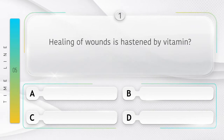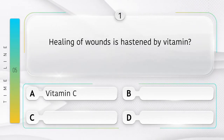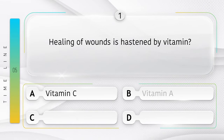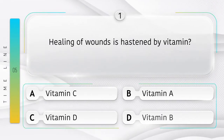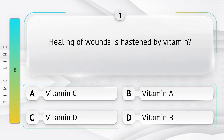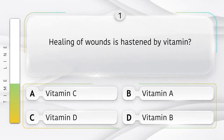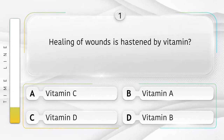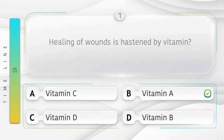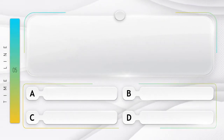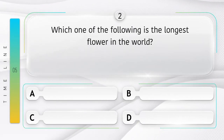Healing of wounds is hastened by which vitamin? Options: A) Vitamin C, B) Vitamin A, C) Vitamin D, D) Vitamin B. The answer is option B, Vitamin A.